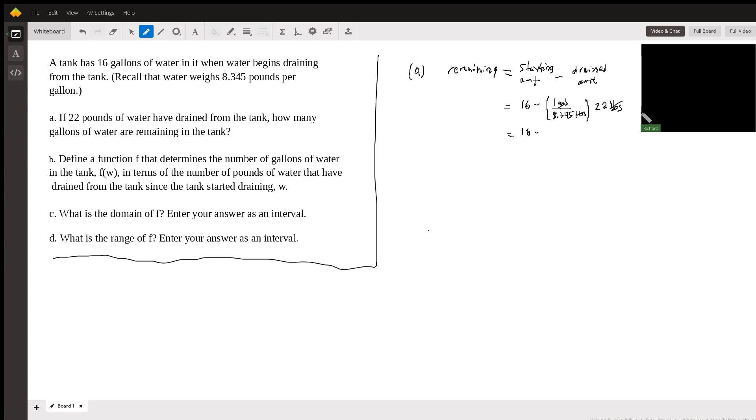Now I'm just going to go on my calculator and take 22 divided by 8.345, which gives me 2.64 gallons. And so that tells me that there are 13.36 remaining gallons remaining.